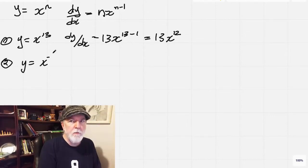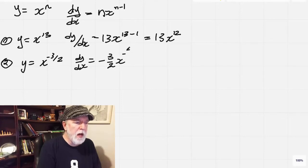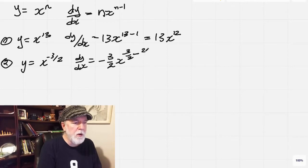Now let's shake it up a little bit. y equals x to the negative 3 halves. Same plan. dy by dx equals, take that negative 3 halves, we're going to put that up front, x, and then we have negative 3 halves minus 1, so minus 2 halves.